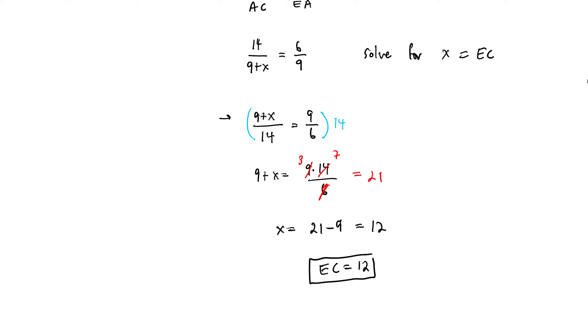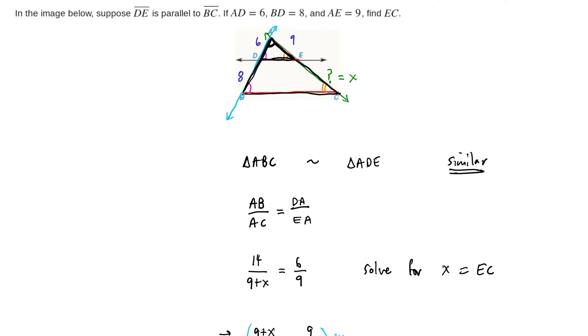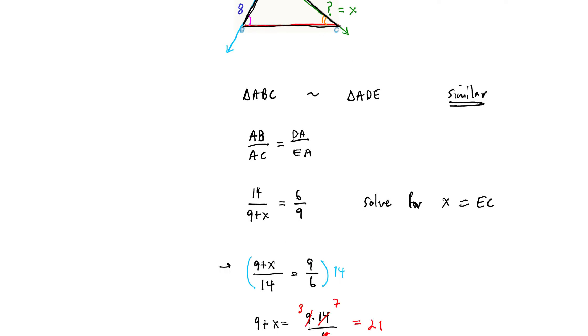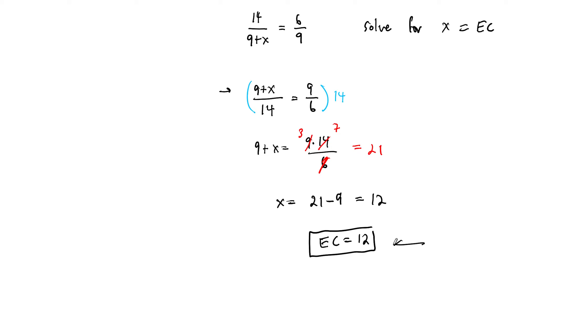And so by this argument, with a little bit of algebra at the end, make sure you understand the algebra. But with a little bit of algebra at the end, the unknown side length that we were asked about has length 12 units. We use the parallel line, so the properties of transversals of a parallel, to show that actually there were two similar triangles here. And then we use the property of similar triangles to actually solve for that missing segment length.